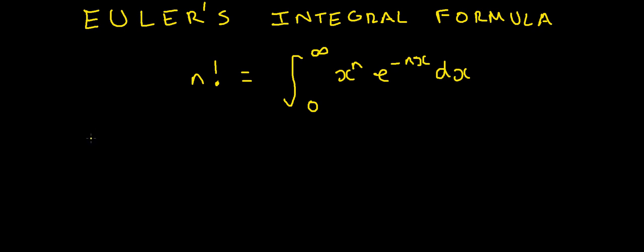In this video I want to talk about Euler's integral formula, also known as Euler's integral of the second kind, which says that n factorial equals the integral from zero to infinity of x to the power n, e to the minus x dx. The usual way of showing this is to use repeated integration by parts, which is also how the gamma function is usually defined. I'll provide links in the description box below. I'm going to show you a different way of proving this, which I think is rather nice.